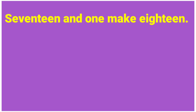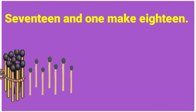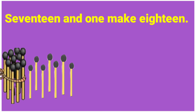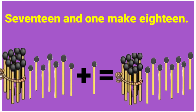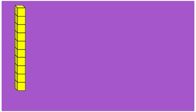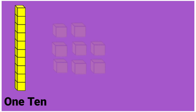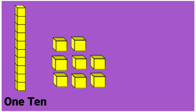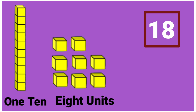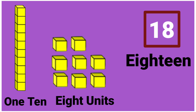17 and 1 make 18. 17 plus 1 is equal to 18. 1 ten and 8 units make 18. 18 in words: E-I-G-H-T-E-E-N. 18.